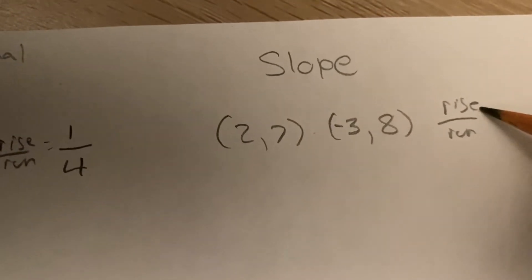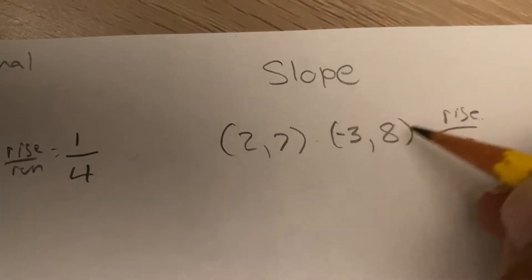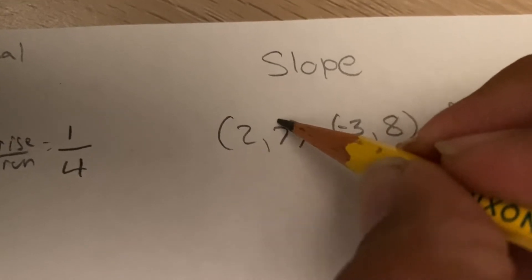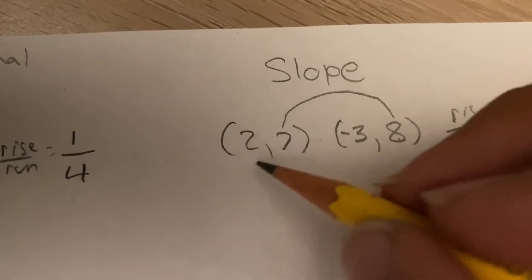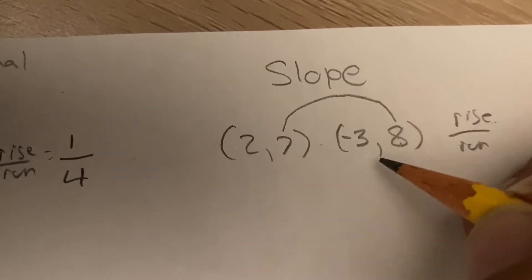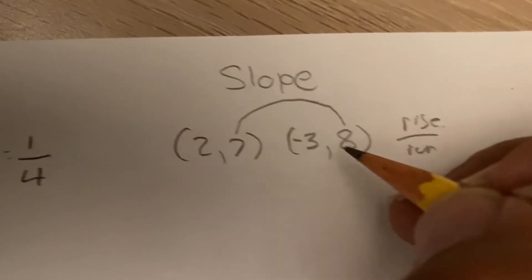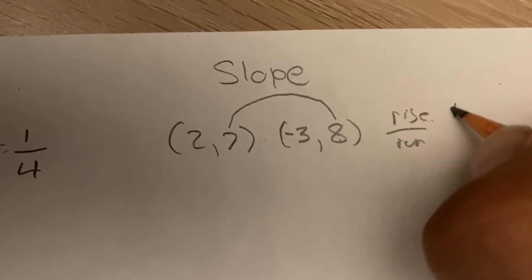Okay, the rise is controlled by the y's, which are the second numbers. So, 7 to 8. How does a 7 get to an 8 doing steps? It takes 1 step to get to 8. So, 1.